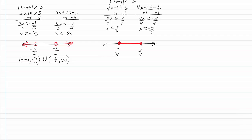So this will be our graph. Our interval notation then will be from bracket negative five-fourths comma seven-fourths bracket. We're going to have a closed dot this time.